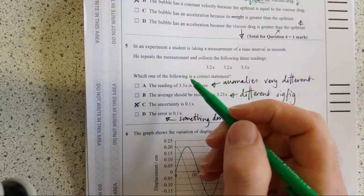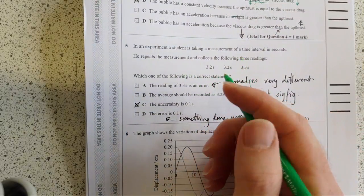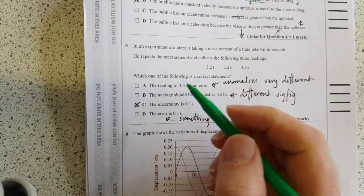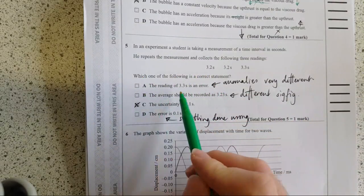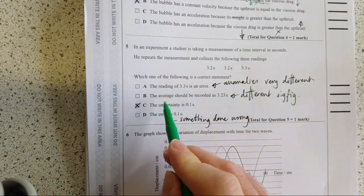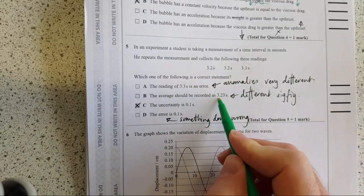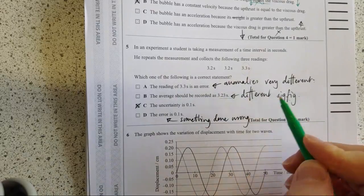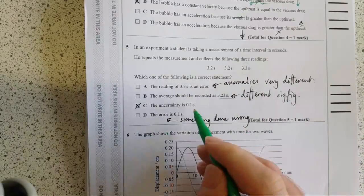Which statement about these readings is correct? Which is the correct statement? Firstly, the reading on 3.3 is an error. An anomaly needs to be really different from the rest. The average should be called as 3.23. No, because this is a different significant figures than the rest. The uncertainty being 0.1, then that is the only one that makes any kind of sense.